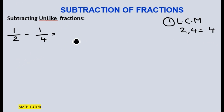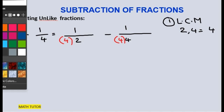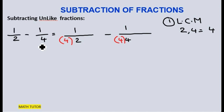Now let me write the fractions here — the first fraction and the second fraction. I will keep the original fractions as they are: 1 by 2 and 1 by 4. My new denominator will be the LCM, which is 4. I wrote my original fractions and the LCM, which is the new denominator for the fractions in the brackets.